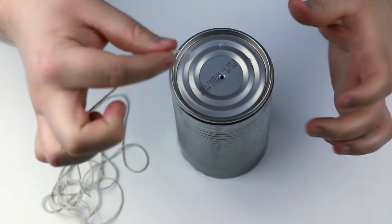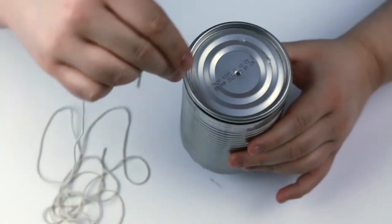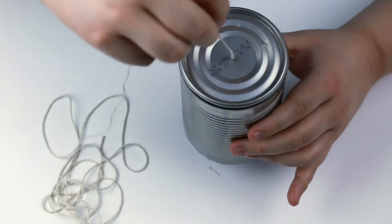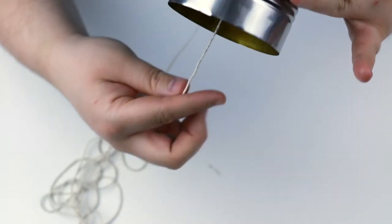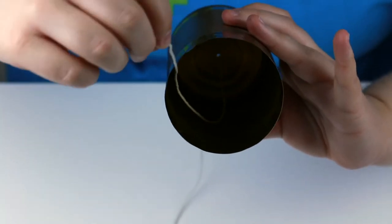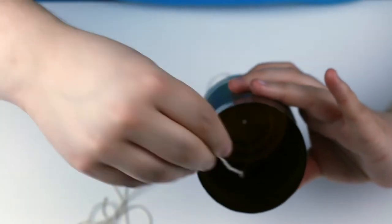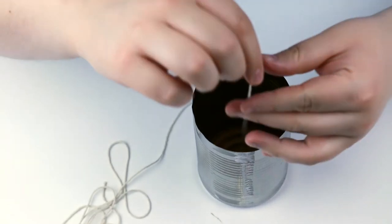Set that to the side. You're going to take your first can, use the string, and you're going to lower the string right into the can. Just like that. Don't stick your hand in the can. You want to make sure that your string comes all the way out. You're going to flip your can up the right way. Perfect!